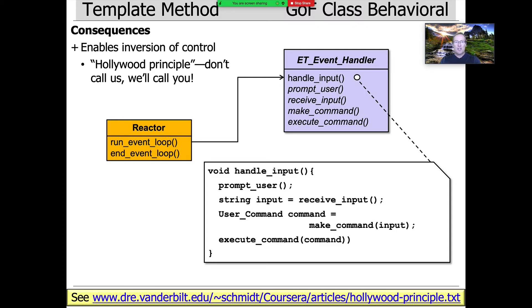Let's talk about the good stuff first. Some of the positive consequences and benefits: this pattern really enables inversion of control. That's why it's so popular in object-oriented frameworks, because they're based on inversion of control — the Hollywood principle: don't call us, we'll call you.